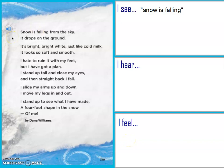Snow is falling from the sky. It drops on the ground. It's bright, bright white, just like cold milk. It looks so soft and smooth. I hate to ruin it with my feet, but I have got a plan. I stand up tall and close my eyes, and then straight back I fall. I slide my arms up and down. I move my legs in and out. I stand up to see what I have made — a four-foot shape in the snow of me. By Dana Williams.